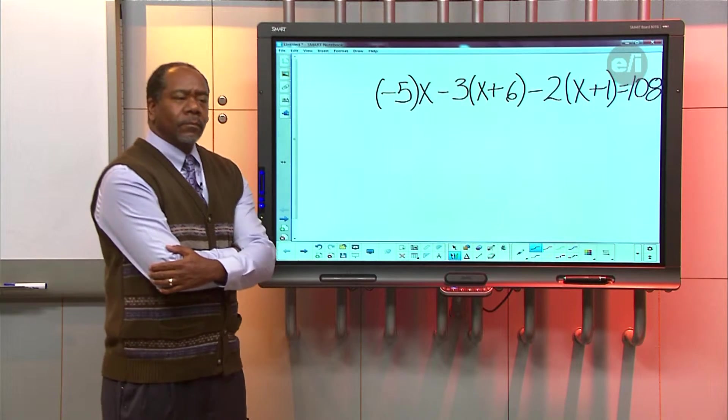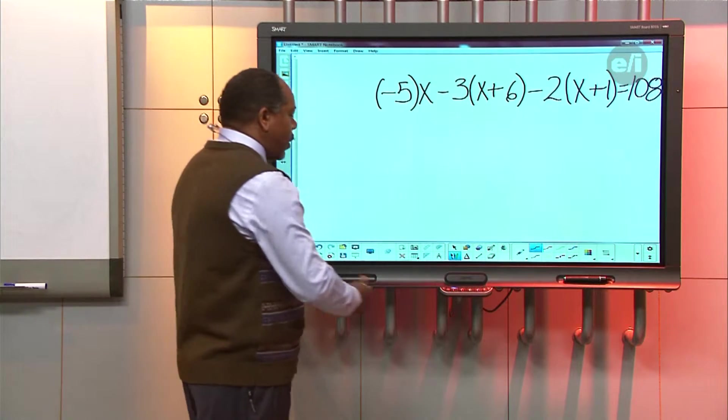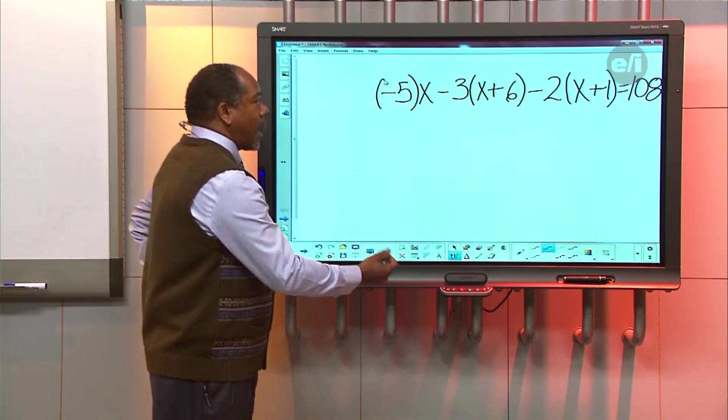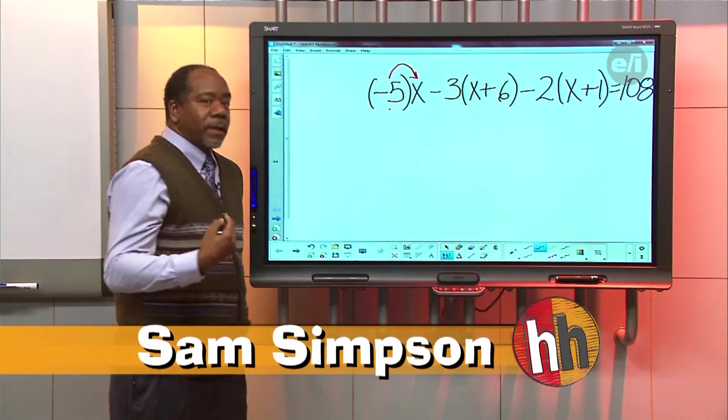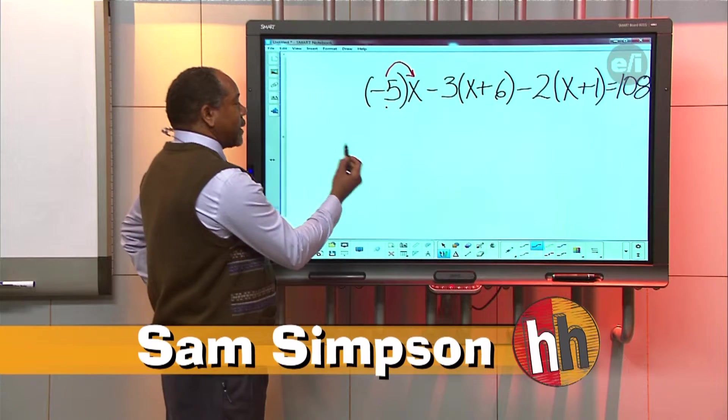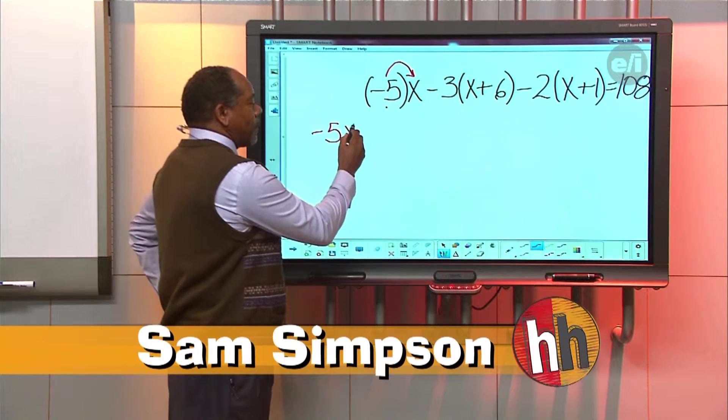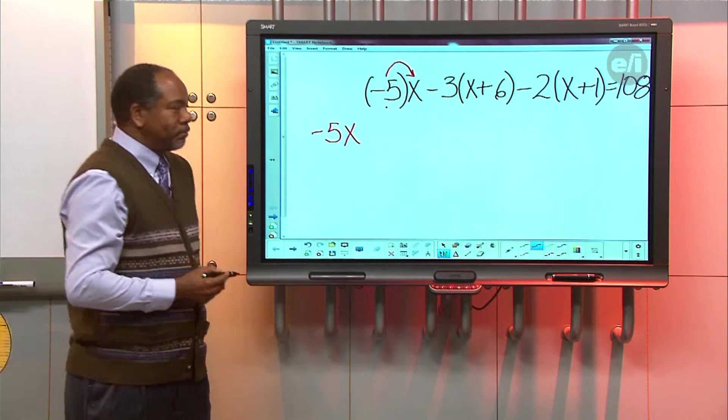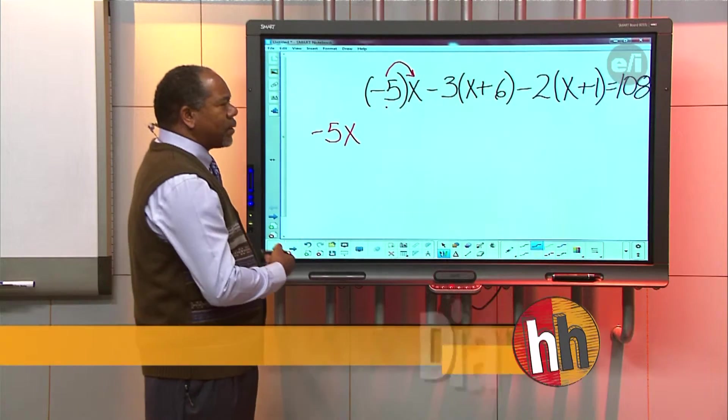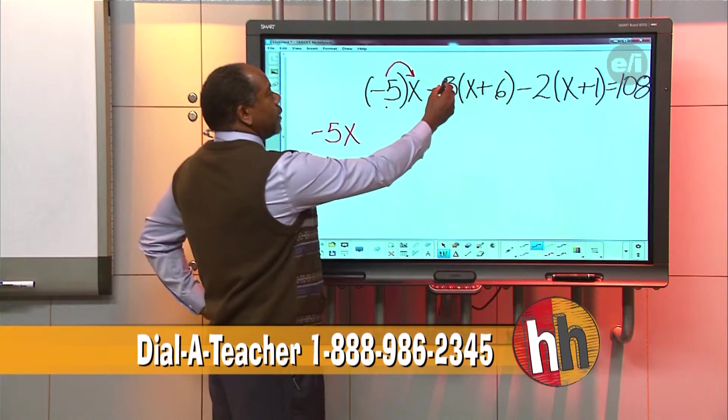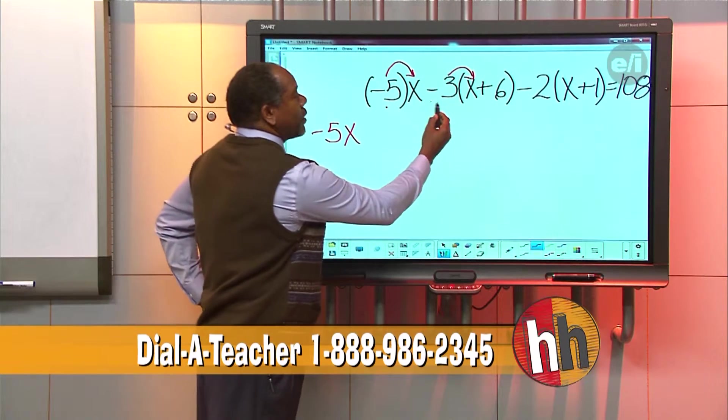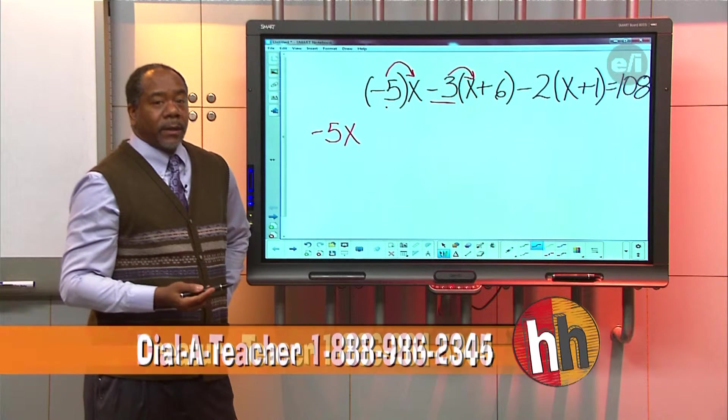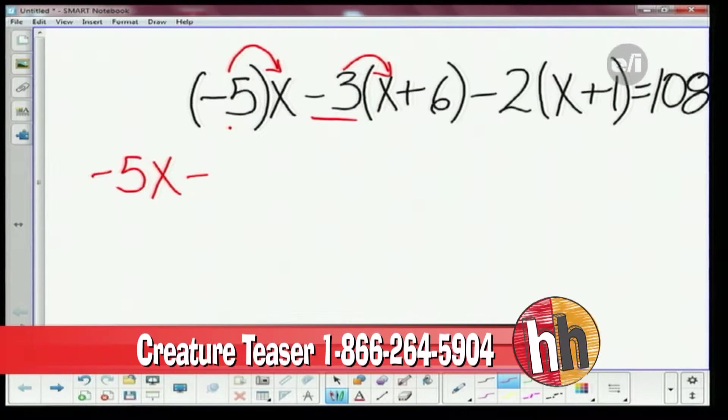Do distributive property. Okay, let's do distributive property. What distributive property has us do is this. I take this first term here, and I'm gonna multiply it by that one. So, I'm gonna take a negative 5 times the X, and I get negative 5X. You agree? Yes. Alright. Now, here is pretty tricky. This second one is pretty tricky.